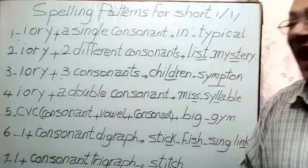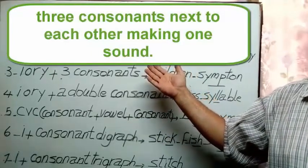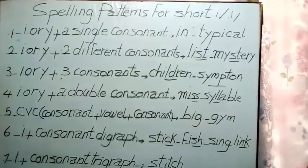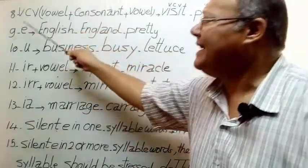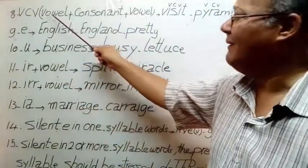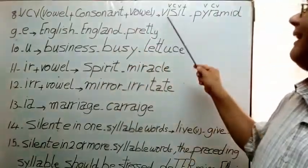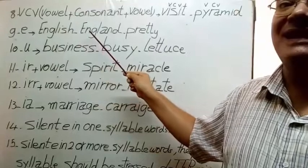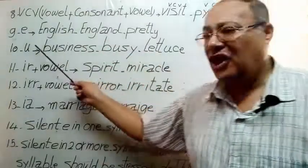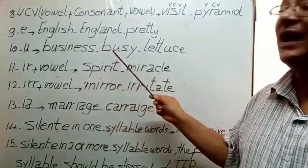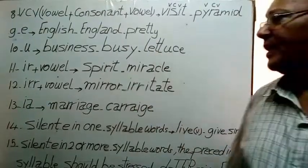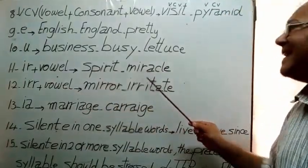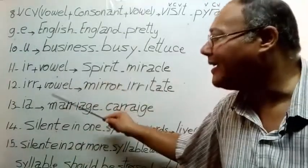Consonant digraph like stitch, fish, sing, link. VCV pattern: vowel consonant vowel. Visit, permit. E: English, England, pretty. U: business, busy, lettuce. IR: spirit, miracle. IRR: mirror, irritate.